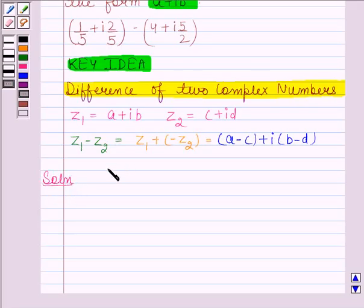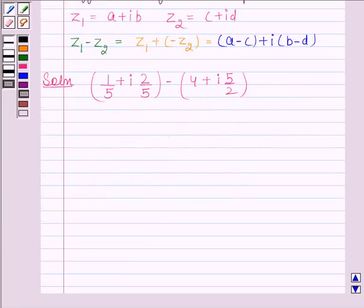The given complex number is (1/5 + i·2/5) - (4 + i·5/2). Now we will apply the rule for the difference of two complex numbers.